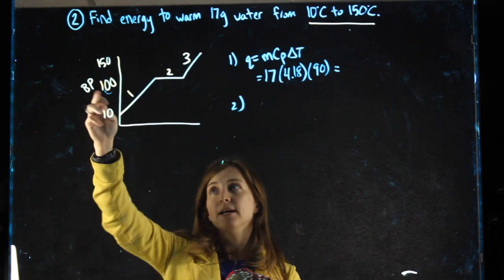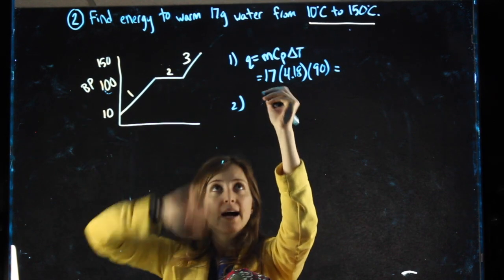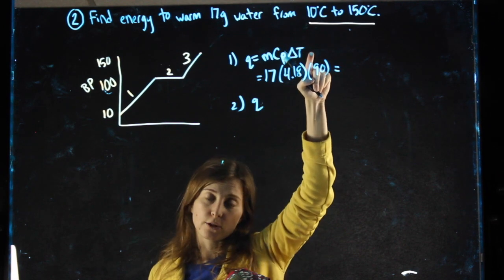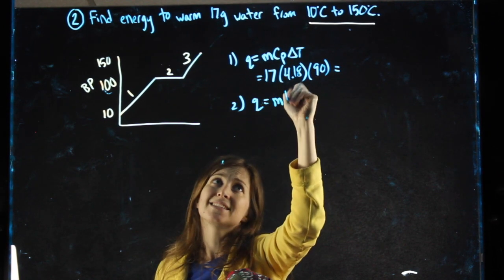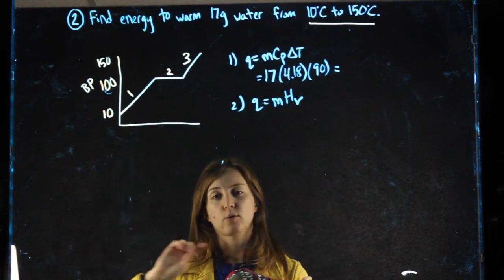The second step is the boiling point. No change in temperature, it's a flat line, so I wouldn't want to use this equation. Instead, I want to use Q equals M HV, because we're at the boiling point.